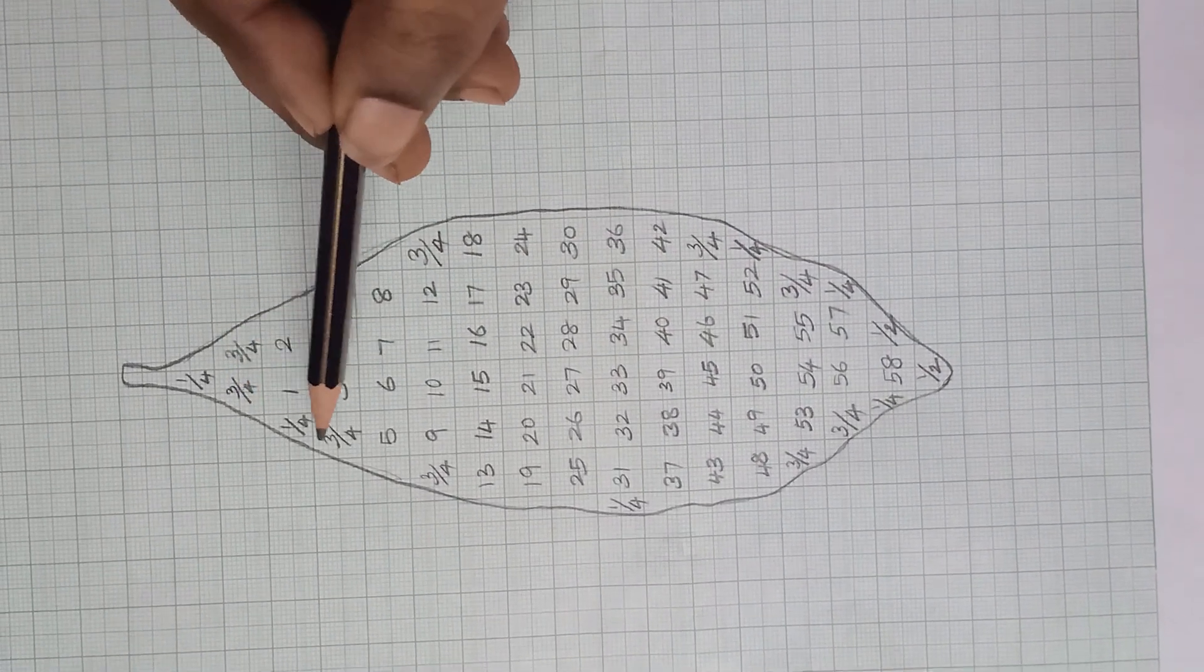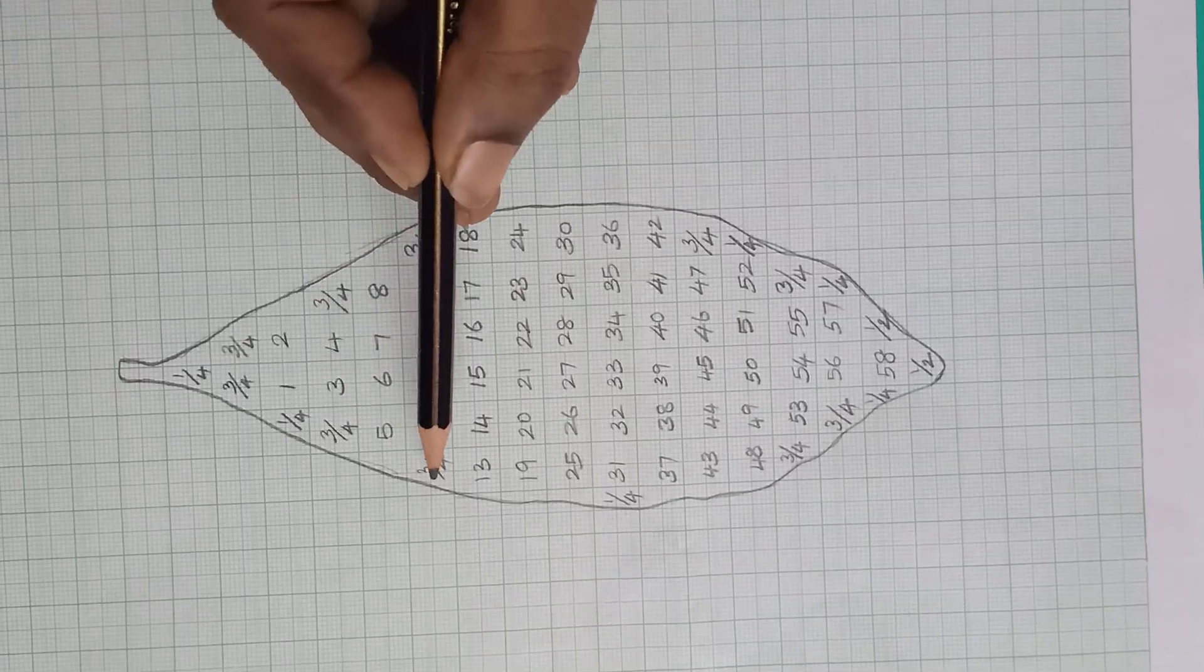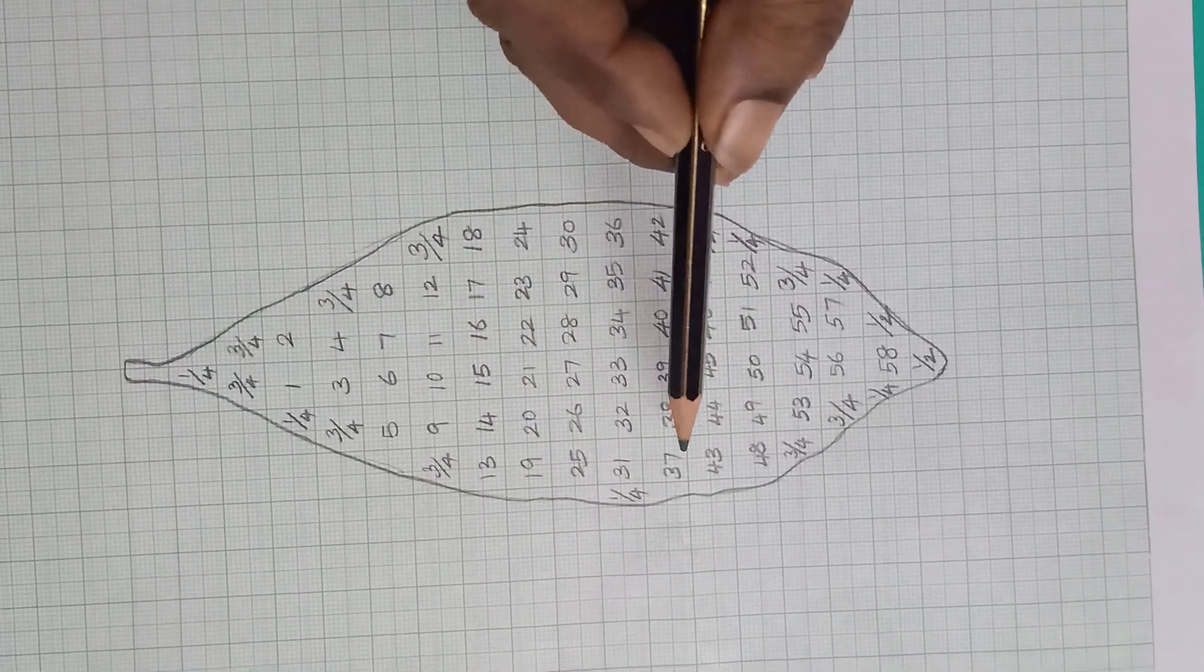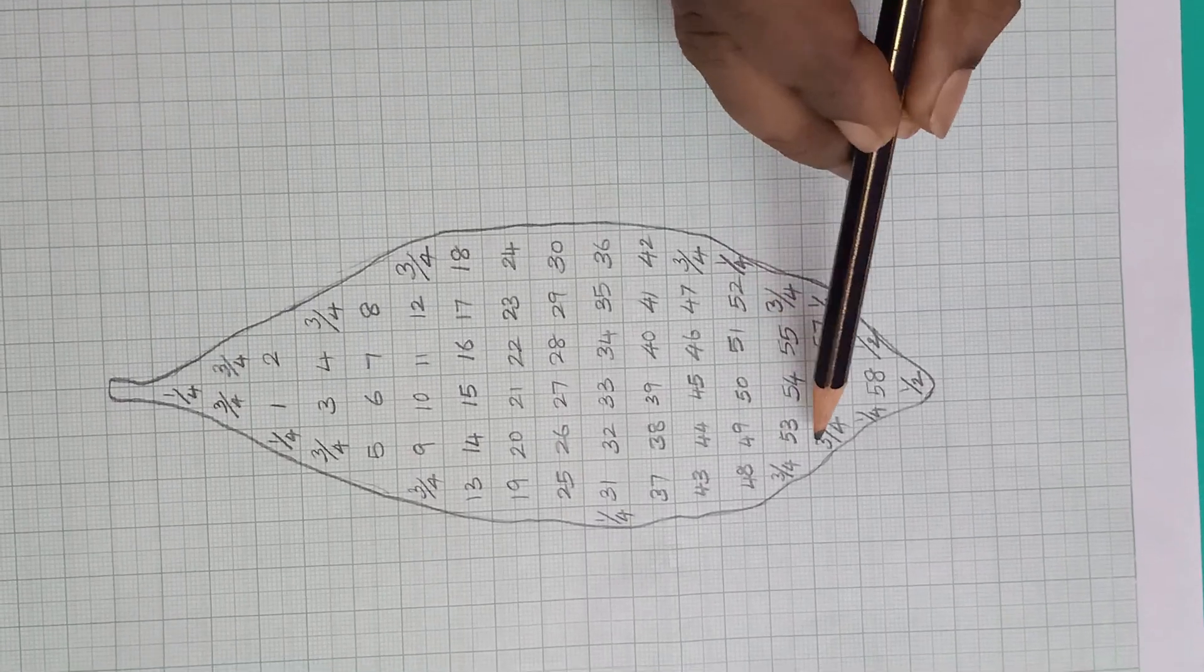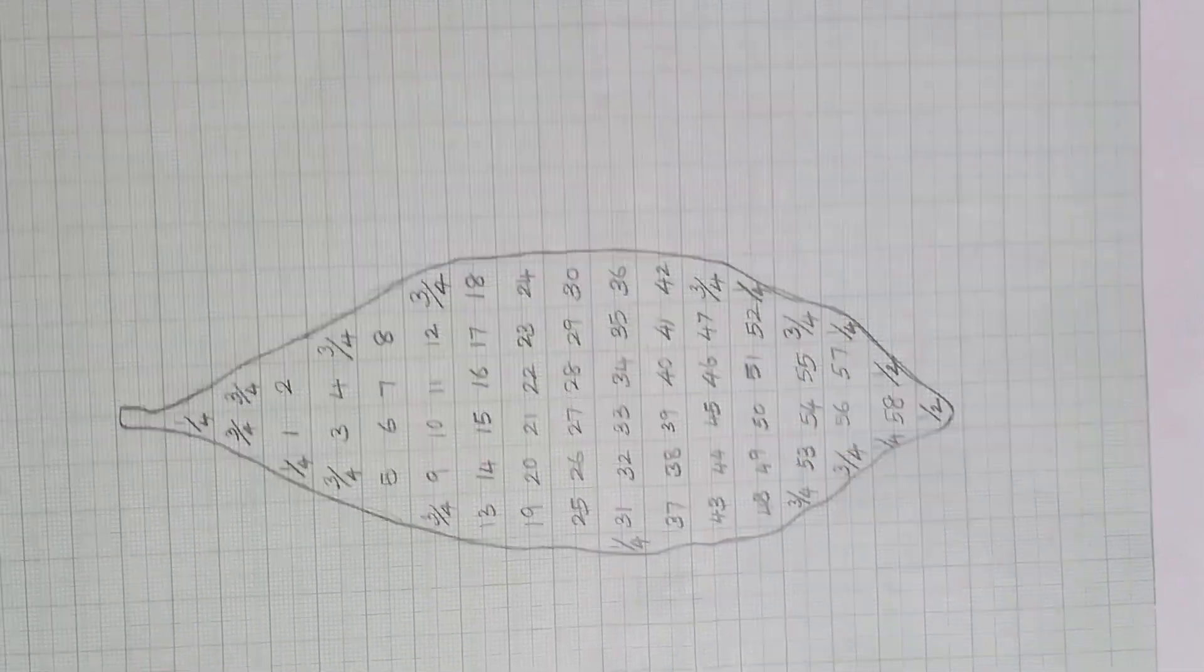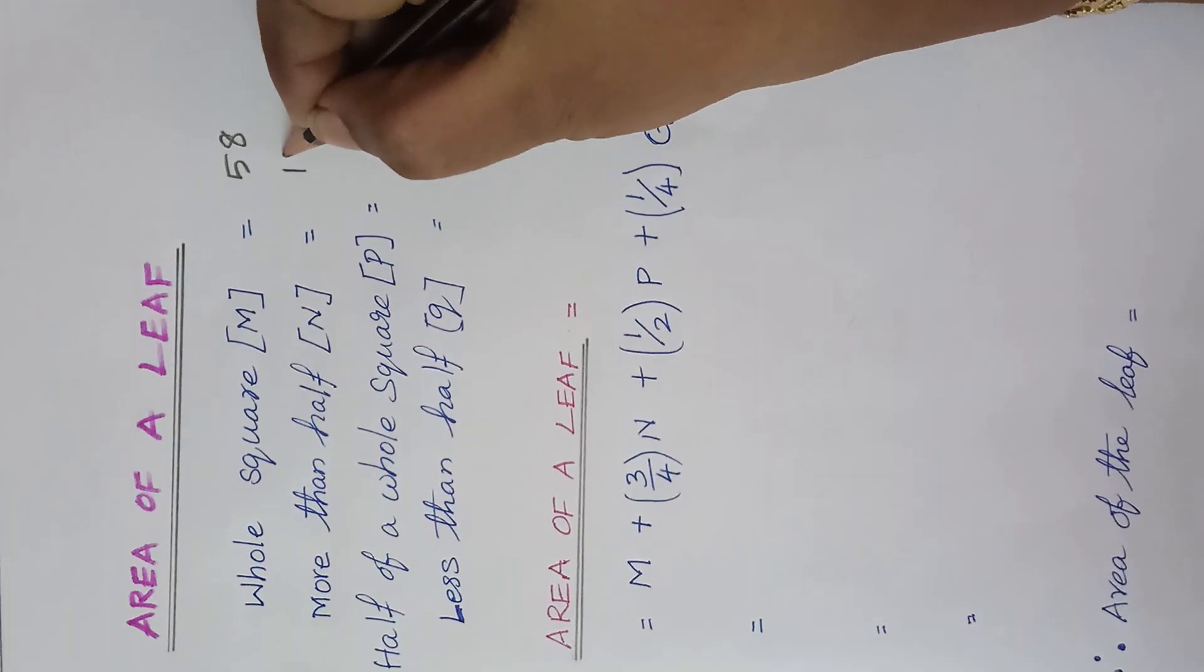1, 2, 3, 4, 5, 6, 7, 8, 9, 10. So totally, 10, 3 by 4.